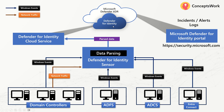We'll discuss this in a lot more detail, but this is the look and feel of MDI within the security.microsoft.com Incidents section. To summarize what Defender for Identity is: it's a cloud-native security solution that monitors everything happening in your on-prem environment — specifically focusing on identity security aspects. It captures Windows events from Domain Controllers, ADFS, ADCS, and Entra Connect, as well as network traffic from Domain Controllers, and the cloud service finds anomalies and malicious activities to create incidents and alerts.